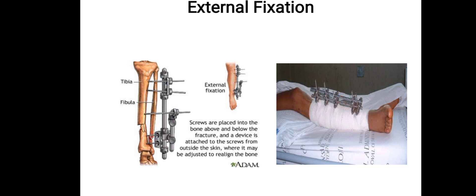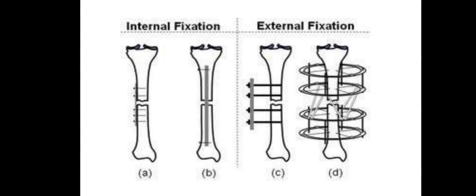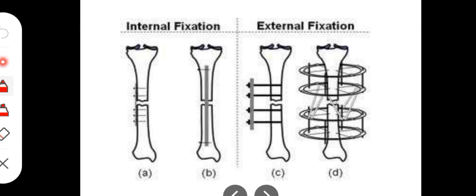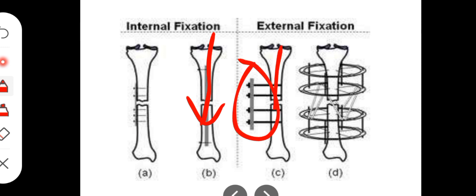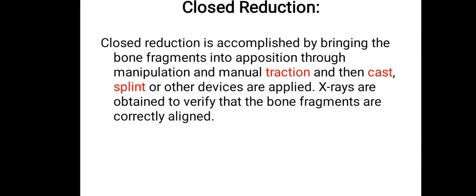External fixation means the hardware is placed outside of the bone. Internal fixation uses hardware inside, while external fixation applies hardware outside, maintaining compression, alignment, and healing of the fracture site.